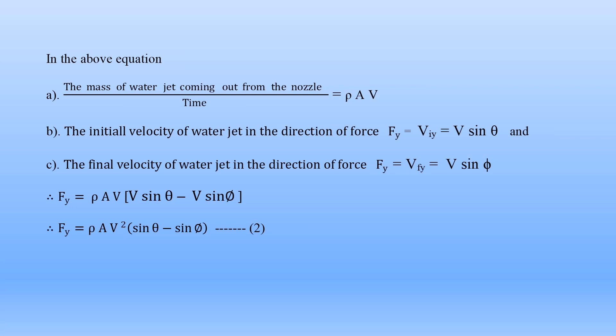The three conditions for the curved metal plate: first condition — horizontal water jet striking the symmetrical stationary curved plate at the center; second condition — water jet striking the stationary symmetrical curved plate tangentially; third condition — water jet striking the stationary unsymmetrical curved plate tangentially. Totally five conditions were discussed. In the next class, we will discuss another concept in impact of water jets. If anyone has doubts on these five conditions, please discuss with me.